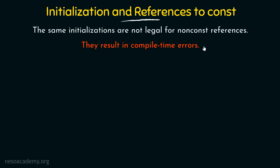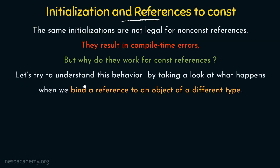The question is why do these work for const references? We have seen that they work for const references but not for ordinary references. In order to find that out, we will understand this behavior by looking at what happens when we bind a reference to an object of a different type. If we are trying to bind a reference to an object of a different type in the case of an ordinary reference, we saw that it throws errors. But in case of references to const, let's see what happens.